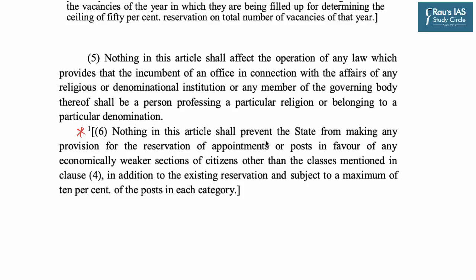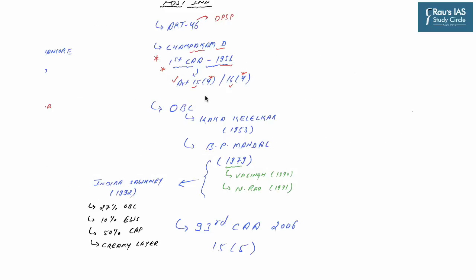The 103rd Constitutional Amendment also added Article 16(6), which says nothing in this article shall prevent the state from making any provision for the reservation of appointments or posts in favour of any economically weaker section. Article 15 is broader than Article 16 — while Article 16 simply talks about employment related to any office under the state, Article 15 encompasses a larger meaning.